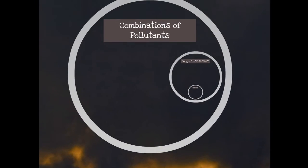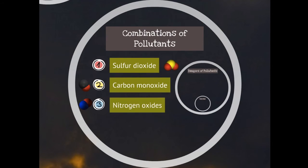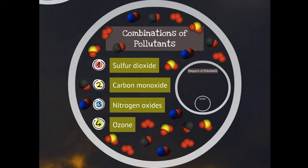Up to now we have considered the following pollutants: sulfur dioxide, carbon monoxide, nitrogen oxides, and ozone. All of these gases are considered particles and exist in the air we breathe as an infinite entity. In other words, we live amongst the combination of pollutants.